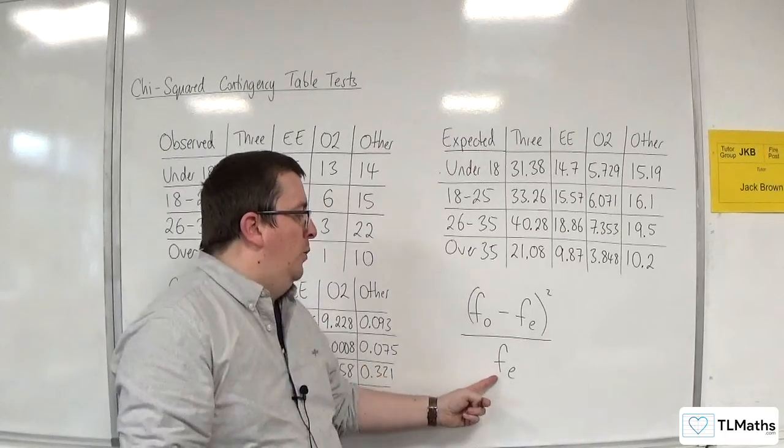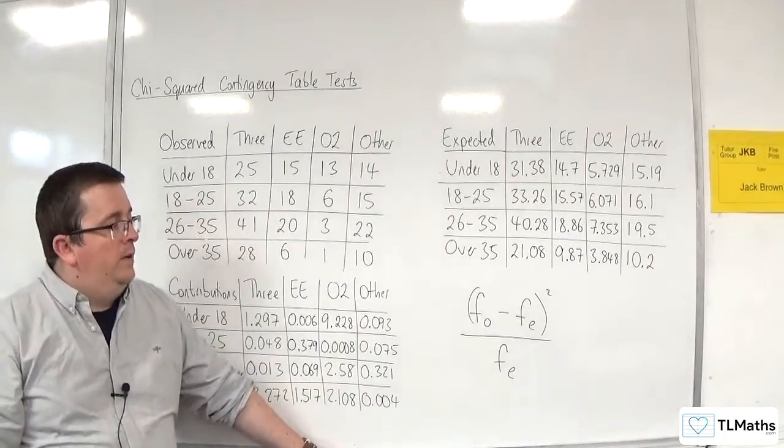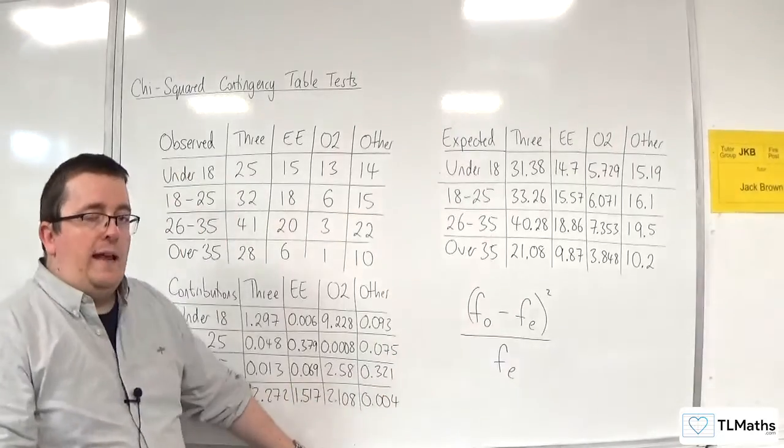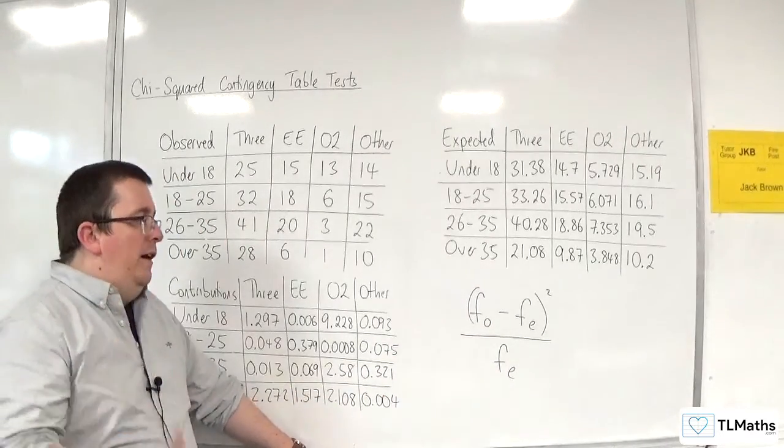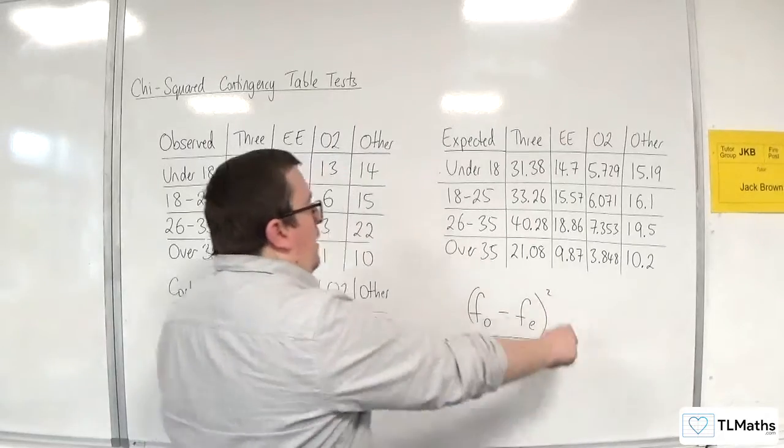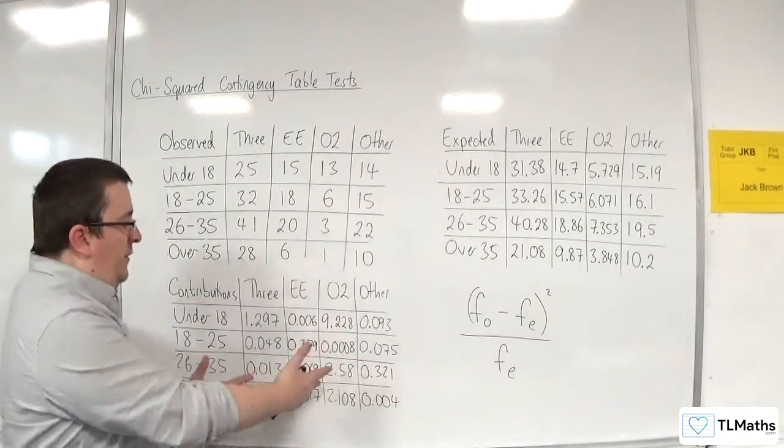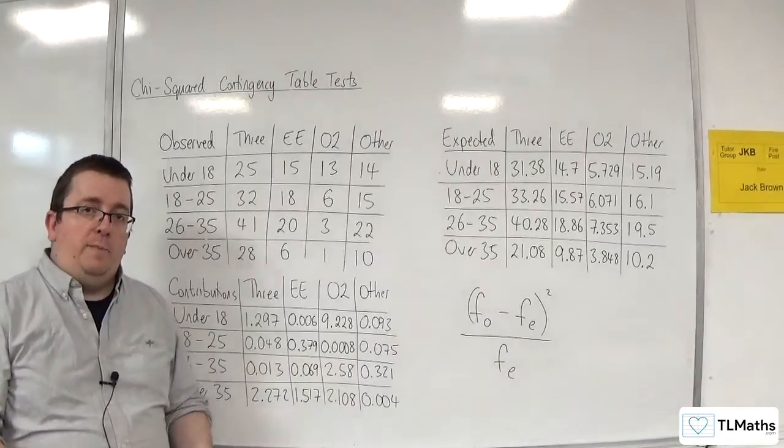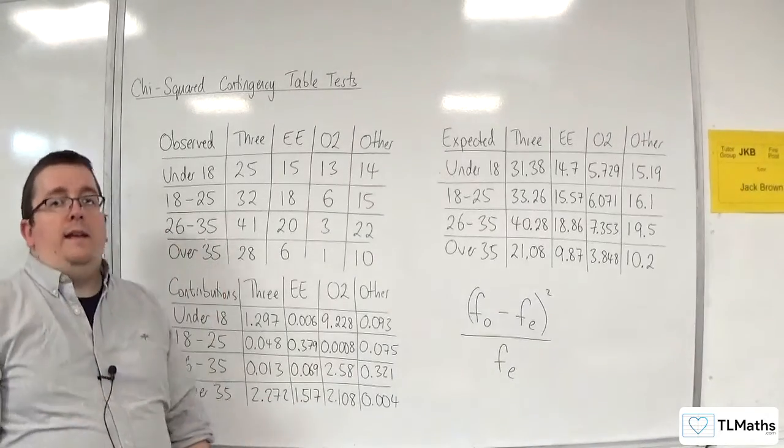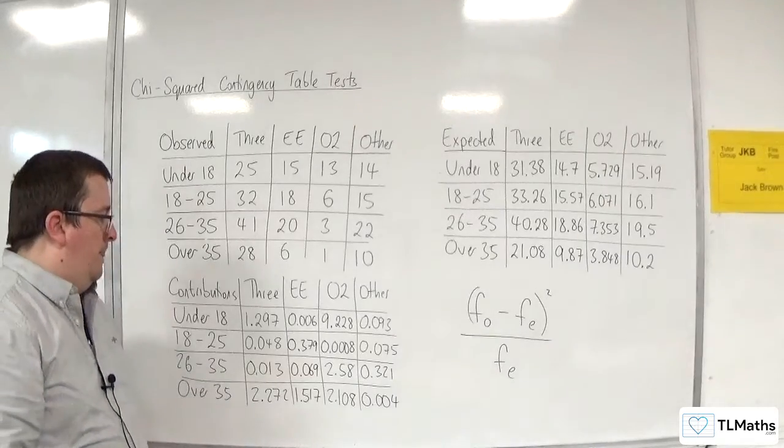Now if the expected frequency is small, the smaller the expected frequency gets, the smaller the denominator gets, and hence the larger the fraction becomes. The larger this becomes, the larger the contribution becomes, because that is the contribution that goes into the table. And then the larger the contribution becomes, the more likely it is that you are going to reject the null hypothesis.